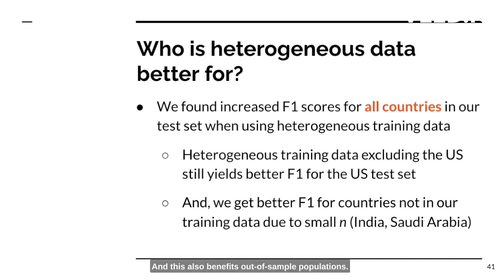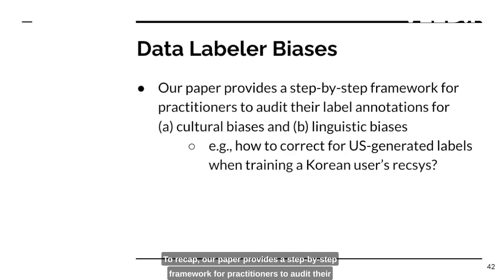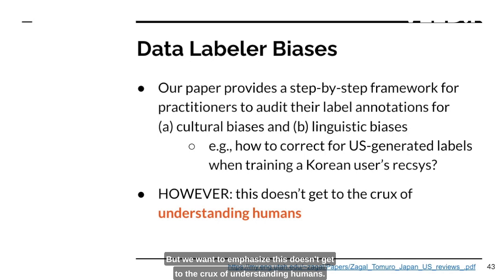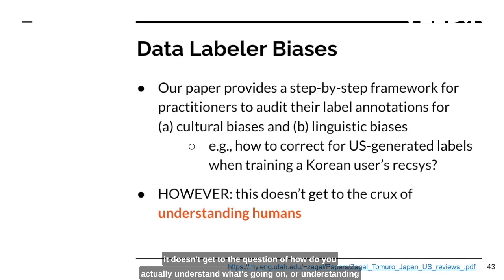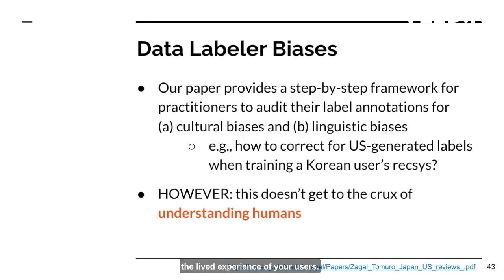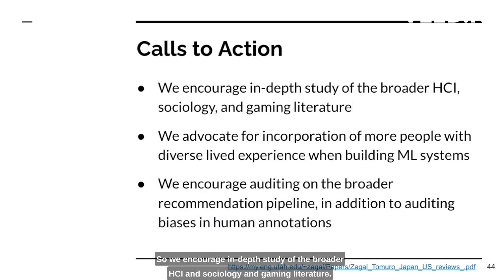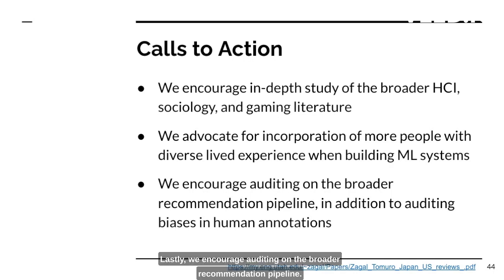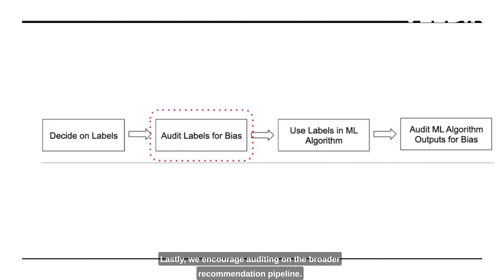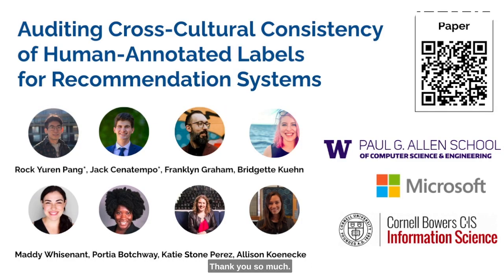To recap, our paper provides a step-by-step framework for practitioners to audit their label annotations for cultural and linguistic biases. But we want to emphasize this doesn't get to the crux of understanding humans — for instance, our cultural analysis relies on hard-coded numbers and doesn't address the lived experience of users. So we encourage in-depth study of the broader HCI, sociology, and gaming literature. We advocate for having more people in the pipeline with diverse lived experience, and we encourage auditing across the broader recommendation pipeline — not only at the annotation step, but throughout. Thank you so much.